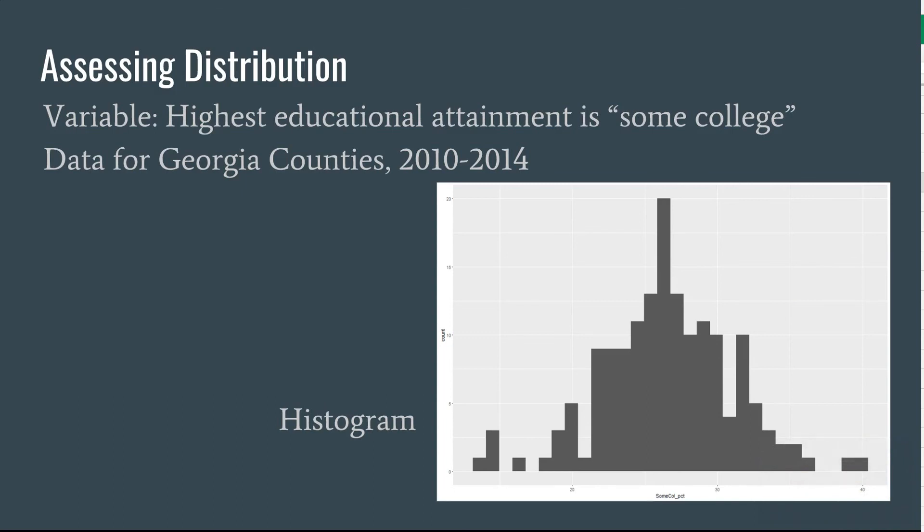If you look at the histogram that you see right now, you can see the overall distribution. What we're looking at here is variables from the census. It is the percent of the population whose highest educational attainment is some college. And you can see this is a fairly normal looking distribution. A histogram just says we're going to do the count. In this case, this is for Georgia, the number of counties that fall into each range.